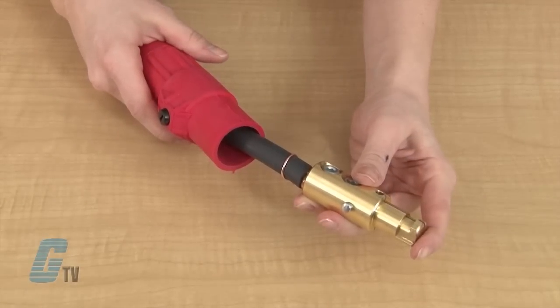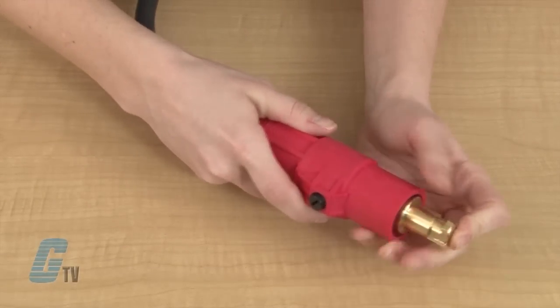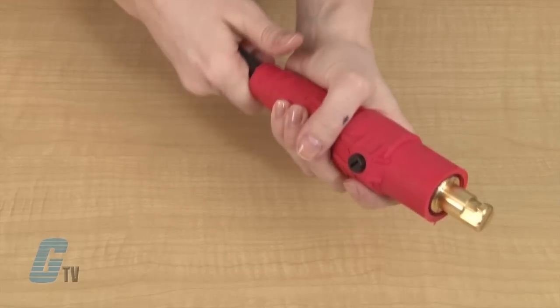I can now line up the button on the contact with the mate arrow on the sleeve and then push the sleeve over the contact.